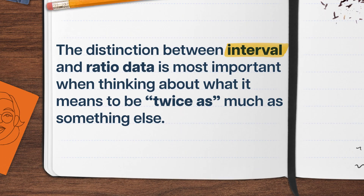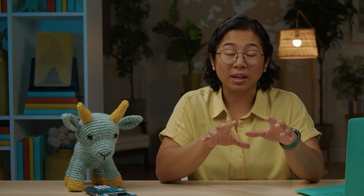The distinction between interval and ratio data is most important when thinking about what it means to be twice as much as something else. Like, 40 degrees Fahrenheit is not twice as hot as 20 degrees Fahrenheit. On the other hand, something like salaries are an example of ratio data, and a salary of $100,000 is twice as much as a salary of $50,000 — before taxes, of course.